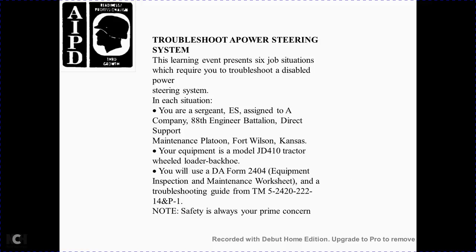Troubleshooting power steering systems. The learning event presents several situations requiring troubleshooting and diagnosis of a disabled steering system. In each situation, you are Sergeant E.S. assigned to design company, 88th Engineering Battalion, Direct Support Maintenance Platoon, Fort Wilson, Kansas. The equipment is a model JD-410 tractor-wheel loader backhoe. You will use DA Form 2404, the Equipment Inspection Maintenance Worksheet, along with troubleshooting guide TM-5-2420-222-14B1. Safety is always the prime concern.